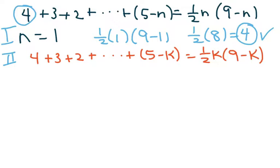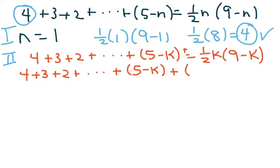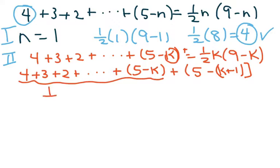Copy everything down and add the next term. We have four plus three plus two plus dot dot dot plus (5 minus k), then we add the next term which is (5 minus (k plus 1)), giving us (4 minus k). On the right side this equals one-half k times (9 minus k) plus (4 minus k).